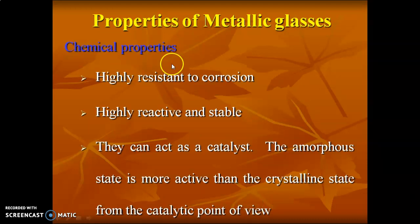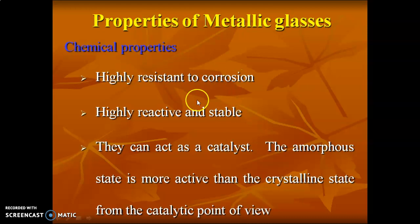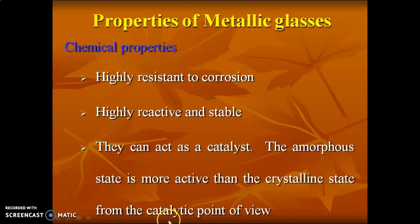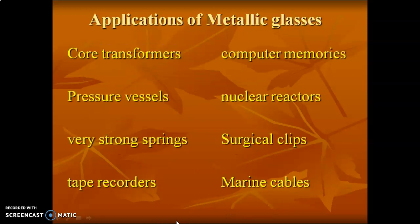Metallic glasses exhibit high saturation magnetization, less core losses, and a narrow hysteresis loop. Chemical property: the major property is high resistance to corrosion — they are not rustable. Being made of glass and metal, they are highly reactive and stable, and can act as a catalyst. The amorphous state is more active than the crystalline state from a catalytic point of view.